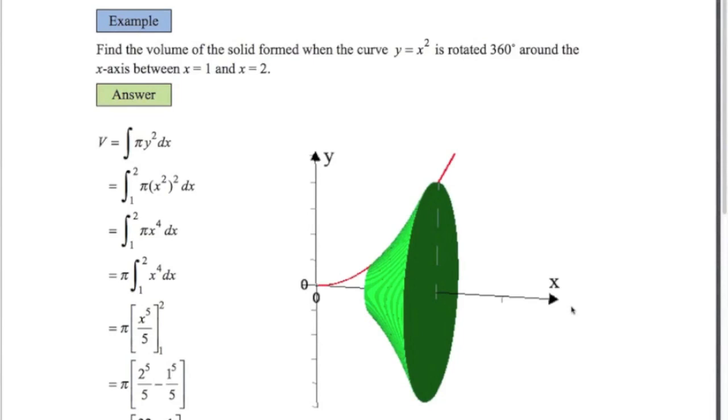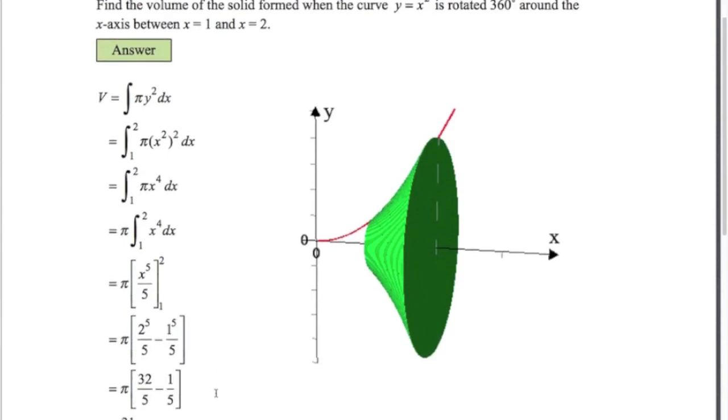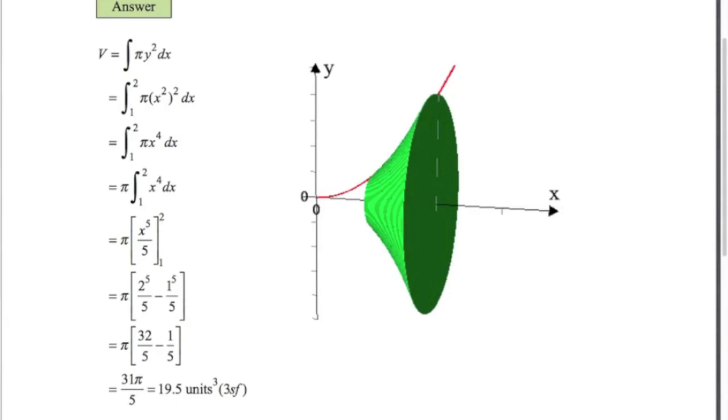Here's the first example. We've got the curve y equals x squared. We're going to rotate it 360 degrees around the x-axis between x equals 1 and 2. You've just got to know the formula: pi y squared dx. What's y in this case? Y is x squared. So we replace y with x squared, and we get pi x to the 4 dx between 2 and 1. Put the pi out the front. Do the integral: add 1 to the power divided by the new number. Substitute in 2 for x and 1 for x and subtract. That gives us 31 pi over 5, or 19.5 units cubed to 3 significant figures. Sometimes in the exam they ask you to give the answer exactly like this with pi in it.